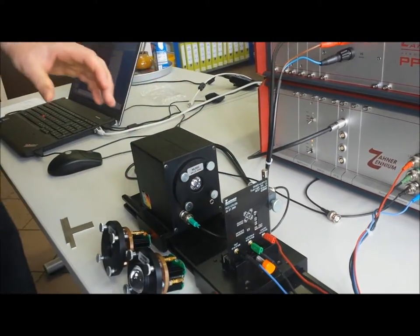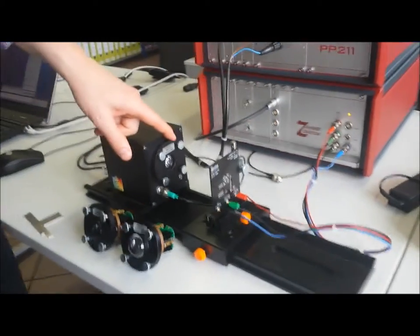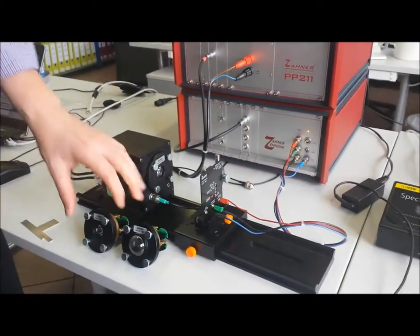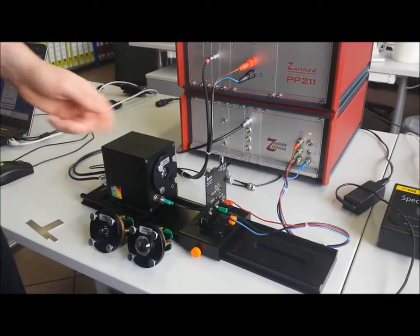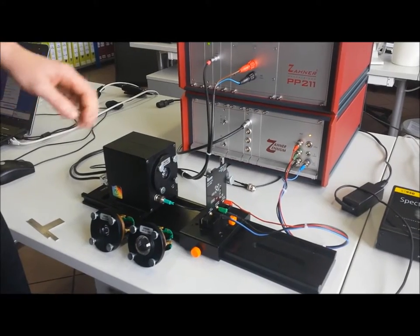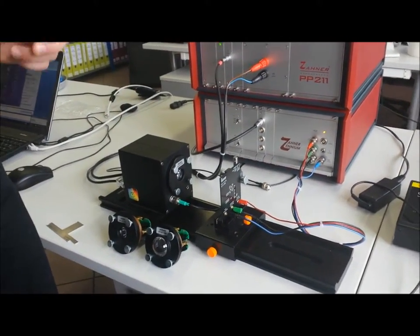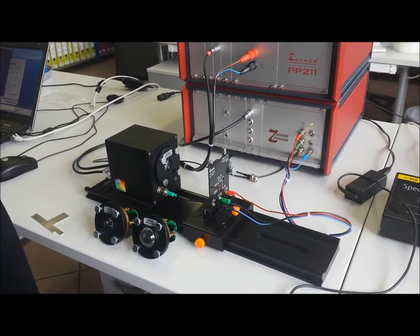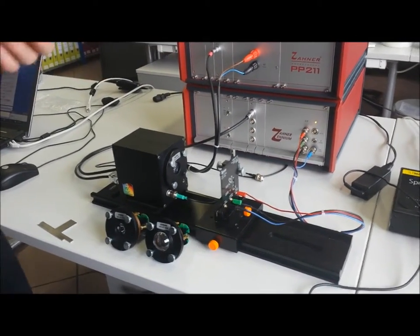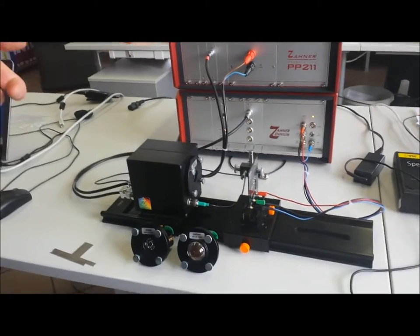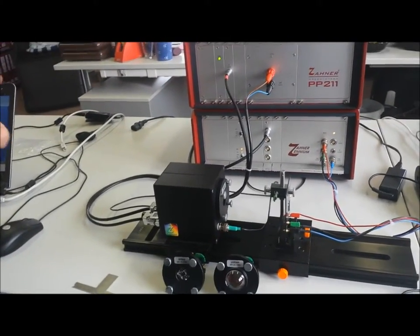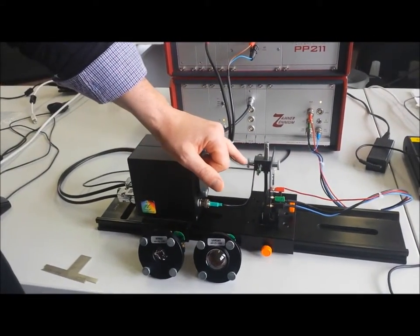You can change the wavelength of the light by just changing the light sources as you can see. This is a very sophisticated system and it's different from all other systems on the market because it has a C in front of the CIMPS. And the C stands for this here.